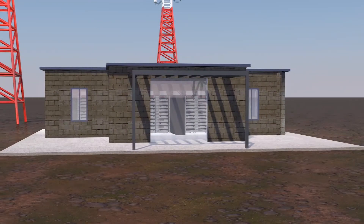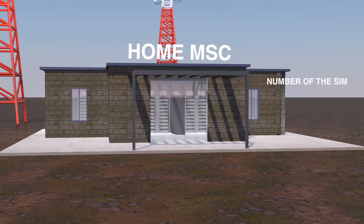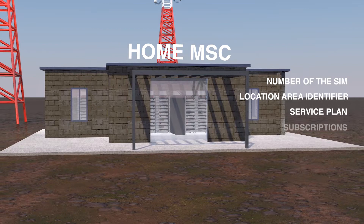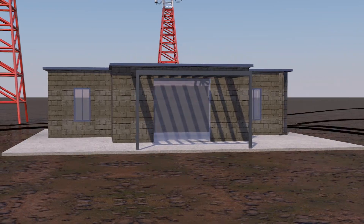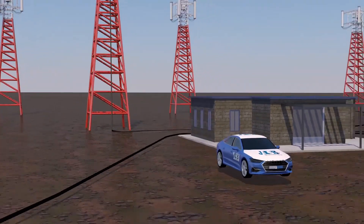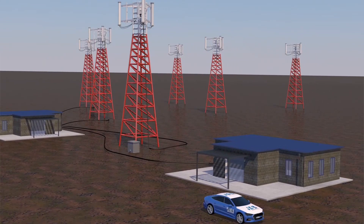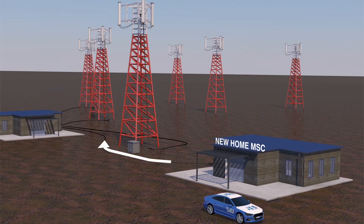The MSC that recorded the information of your SIM card in its database is called the Home MSC. This information can include the serial number of the SIM, the location area identifier — that is, the last visited geographical area — as well as the service plan, the PIN code, and above all, the telephone number. If you travel outside the geographical area covered by your Home MSC, a new MSC will handle your calls, communicating with your Home MSC, which will always know your cell location and will correctly direct your incoming calls to your phone.